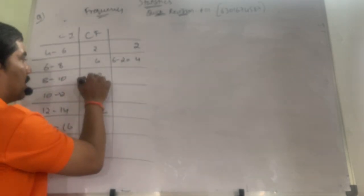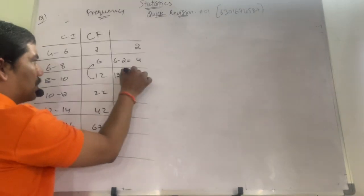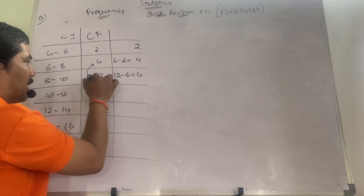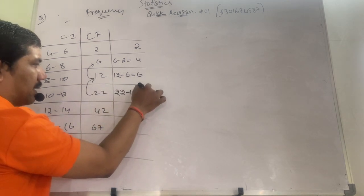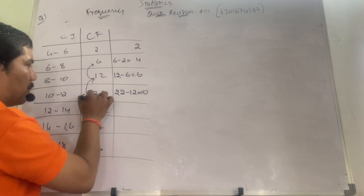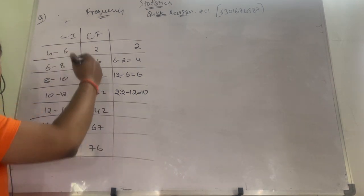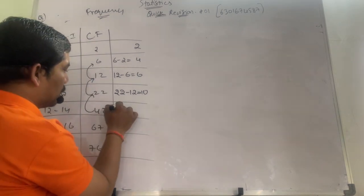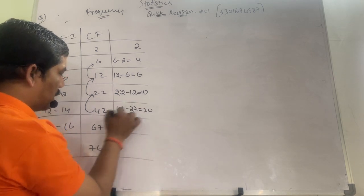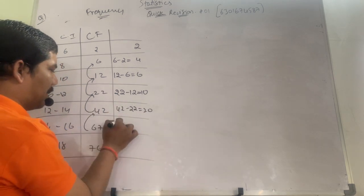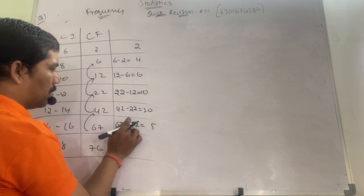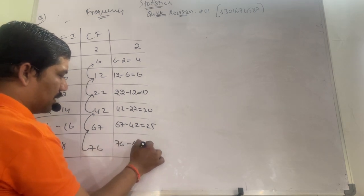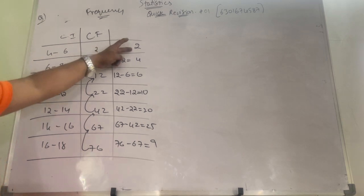Next, 12 minus 6 you do, what is the answer? 6. Next, 22 minus 12 you do, 10. Next, 42 minus 22 you do, understanding? You subtract the lower from the upper. 42 minus 22. Next, 67 minus 42. 76 minus 67. So how much you get? 9. So these are your frequency.